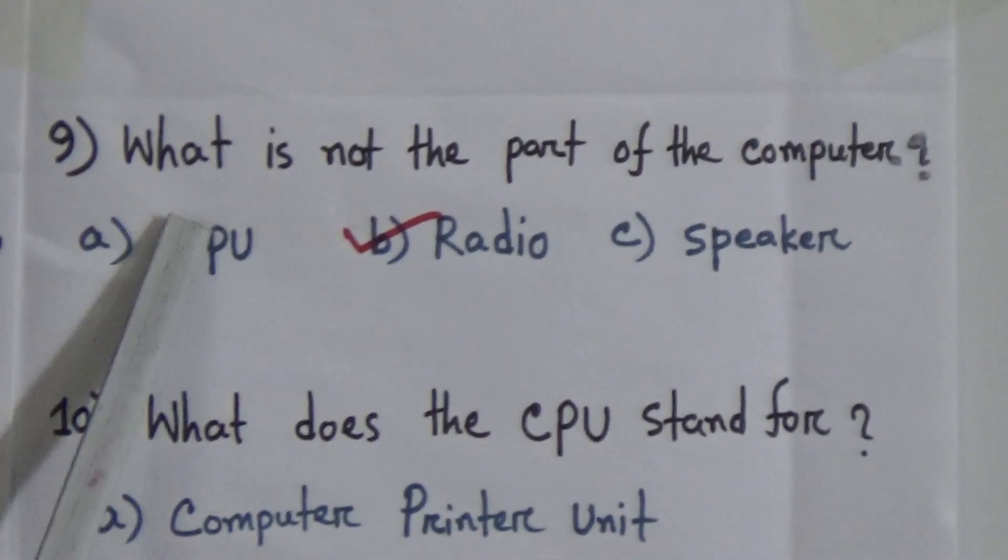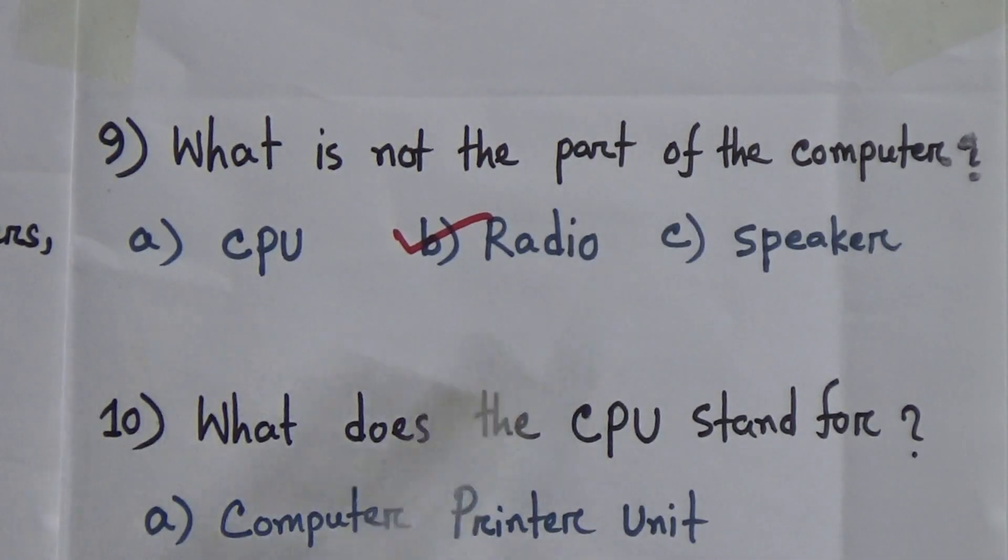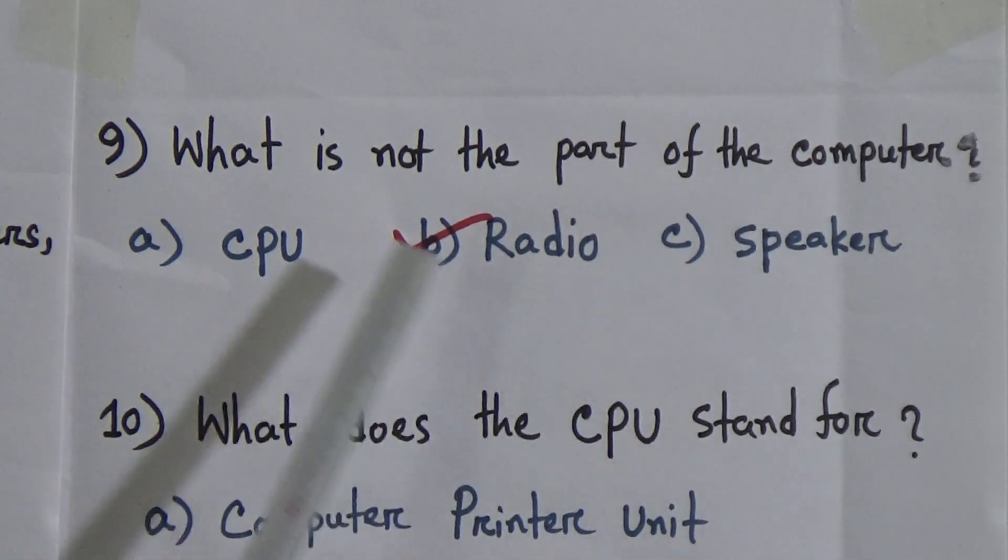9. What is not the part of a computer? A: CPU, B: radio, C: speaker. Student, we know that CPU and speaker are the parts of a computer. So, radio is not the part of a computer. The correct answer will be B, radio.